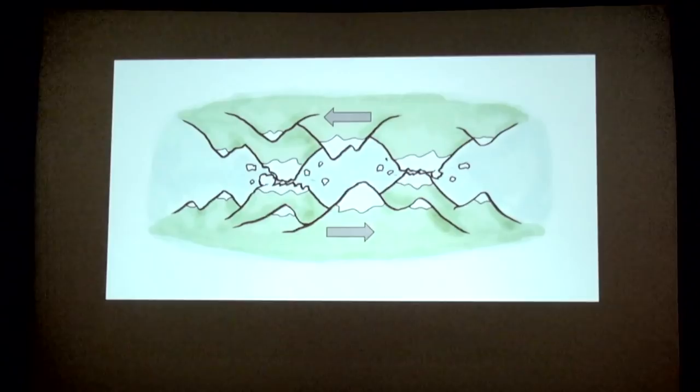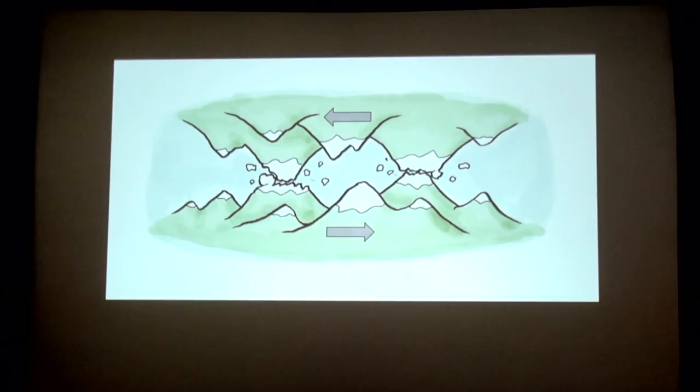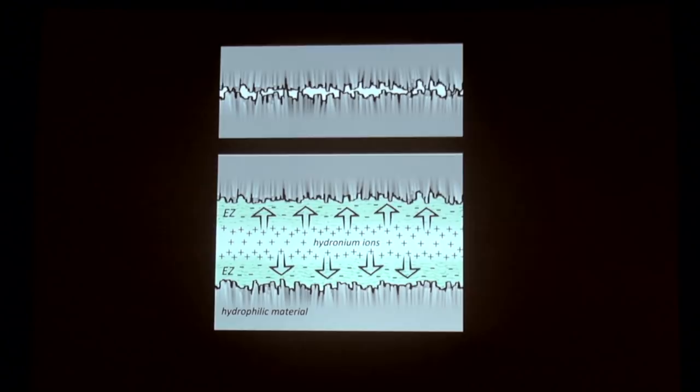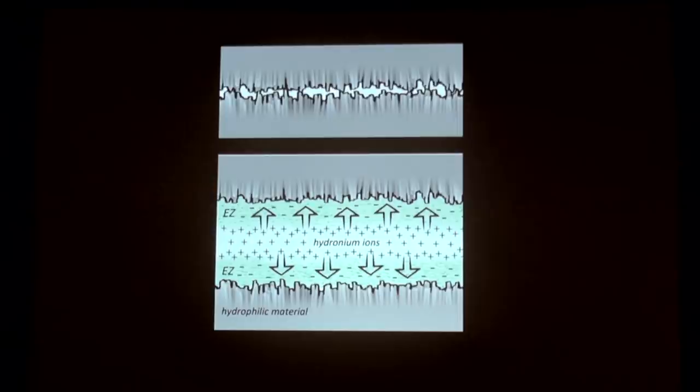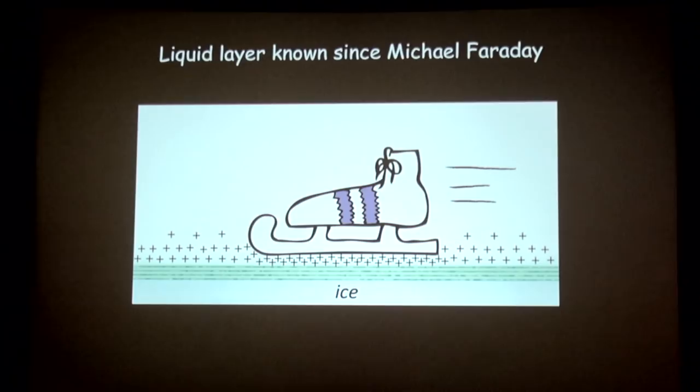Low friction: why is there friction to start with? Friction is caused by asperities, like mountaintops. If you have two hydrophilic surfaces that are a bit ragged and you add water, you get an exclusion zone on each surface and positive hydronium ions in between. The hydronium ions repel each other, pushing the surfaces apart. Therefore, if you shear back and forth, you get very little friction. People have demonstrated exactly that with polymers.